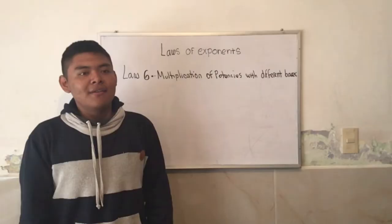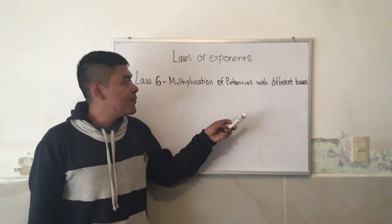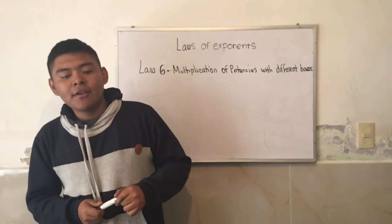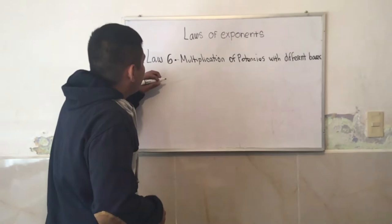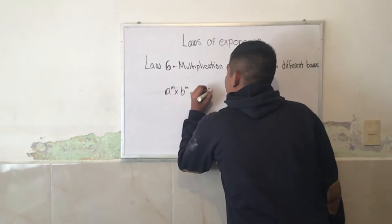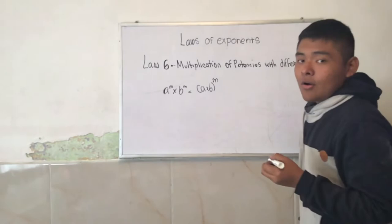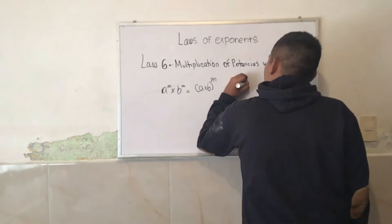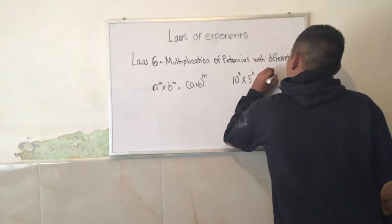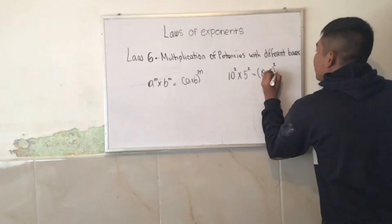Sixth law: multiplication of potencies with different bases. This law is the opposite of the fourth law. That is, if there are different bases but with equal exponents, the bases are multiplied and the exponents are maintained. A to the M times B to the M is equal to A times B to the M. For example, we have 10 to the 2 times 5 to the 2 is equal to 10 times 5 to the 2, which is equal to 50 to the 2.